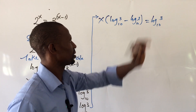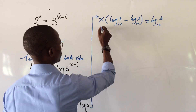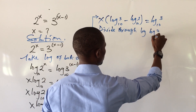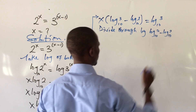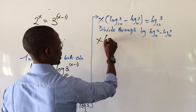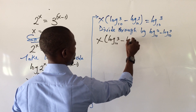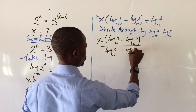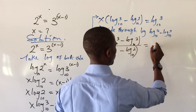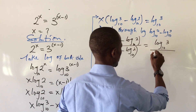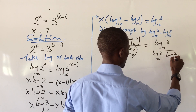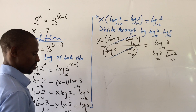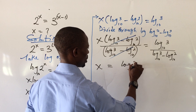We are looking for x, so we divide through by (log 3 base 10 minus log 2 base 10). Doing that gives us x times (log 3 base 10 minus log 2 base 10) over (log 3 base 10 minus log 2 base 10). Since the numerator and denominator are the same, they cancel, leaving us with x equals log 3 (base 10) over (log 3 base 10 minus log 2 base 10).